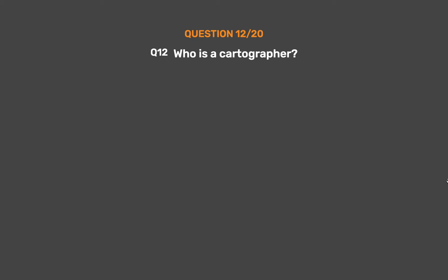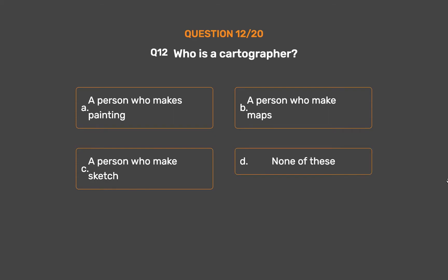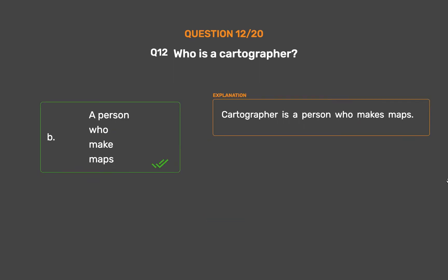Question 12: Who is a cartographer? Option A: A person who makes paintings. Option B: A person who makes maps. Option C: A person who makes sketches. Option D: None of these. The correct answer is Option B: A person who makes maps. A cartographer is a person who makes maps.